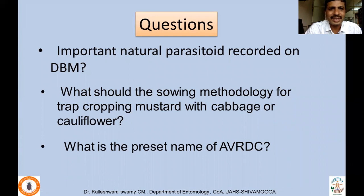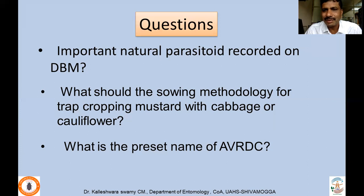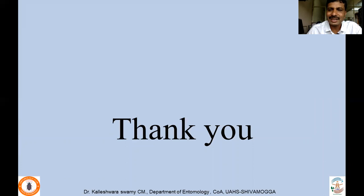I'll end this lecture with two questions: What are the two important natural parasitoids recorded on DBM? What should be the sowing methodology for trap cropping mustard with cabbage or cauliflower? What is the present name of AVRDC — the organization working on various vegetables to increase productivity and develop plant protection technologies — and where is it located? Thank you very much. If there are any questions, you can ask below or email me.